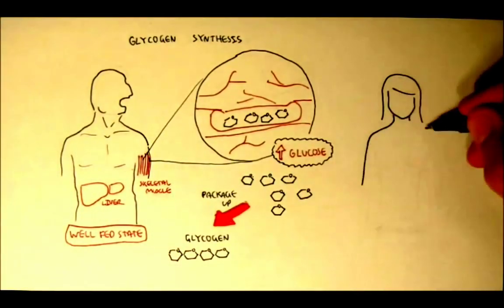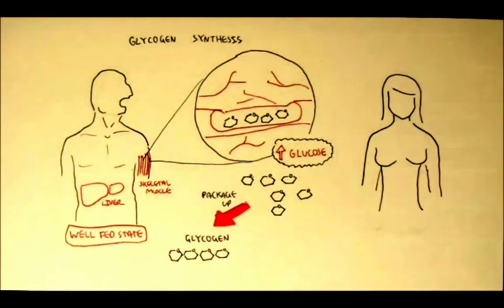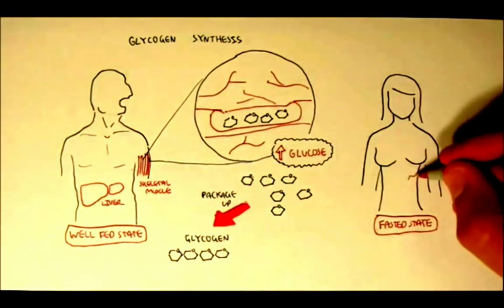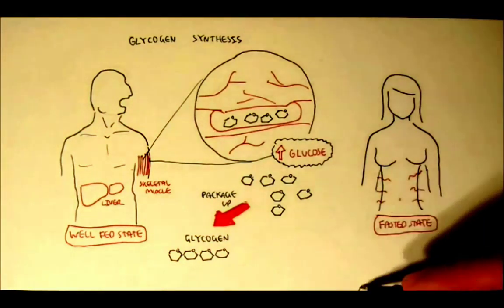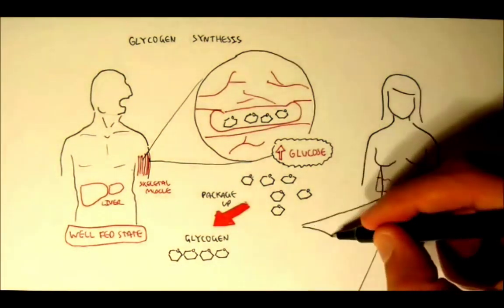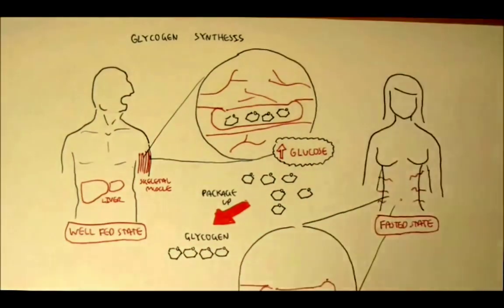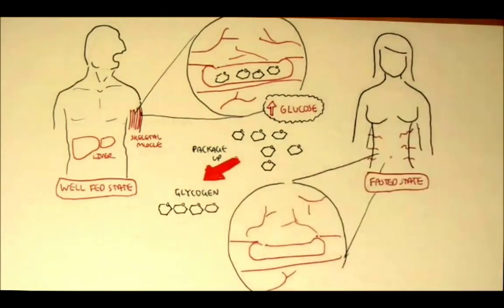So what happens after a day of no eating? Well this would mean the fasted state. This would be in the fasted state, and if we look at this lady's body and look at her blood circulation, she will have low blood glucose levels because she's in a fasted state. She hasn't eaten anything.